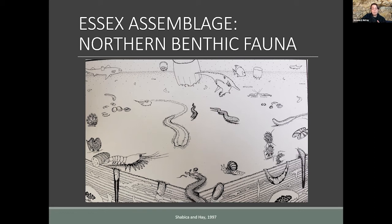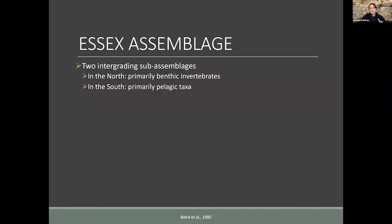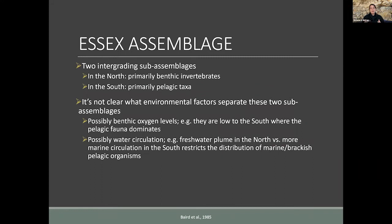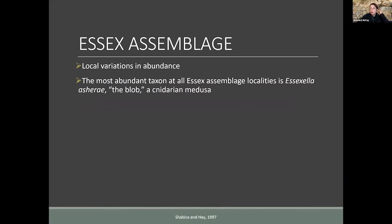Within the Essex assemblage, there are two integrating sub-assemblages. In the north there are primarily benthic invertebrates — lots of things living on the seafloor and burrowing, with far more evidence of infaunal activity. In the south there are primarily pelagic taxa — lots of swimming things and fewer benthic things. It's not entirely clear what environmental factors separate these two sub-assemblages. It has been argued that in the south there might be very low benthic oxygen levels leading to dominance of pelagic fauna, and water circulation may also play a role.